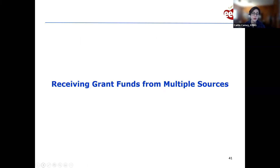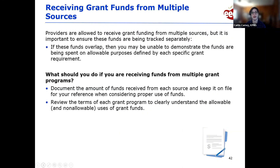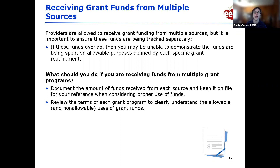You may be receiving grant funds from multiple sources, which is okay, but you need to track these funds separately. If you're not able to demonstrate that the funds are being spent on allowable purposes, you'll have a problem. Make sure each specific grant requirement is met for each grant you're using. Document the amount of funds received from each source and keep it on file — and make sure you can actually find it when needed. Review the terms of each grant program to understand allowable and non-allowable uses.